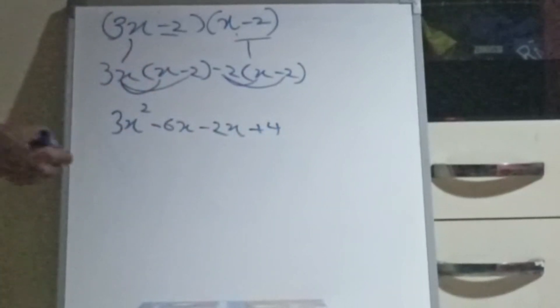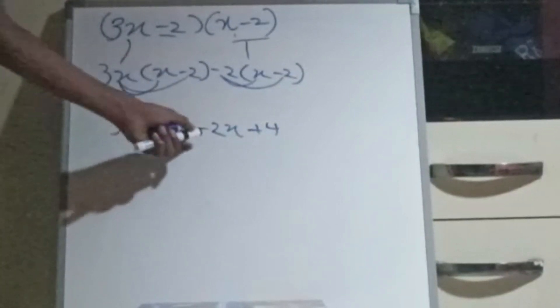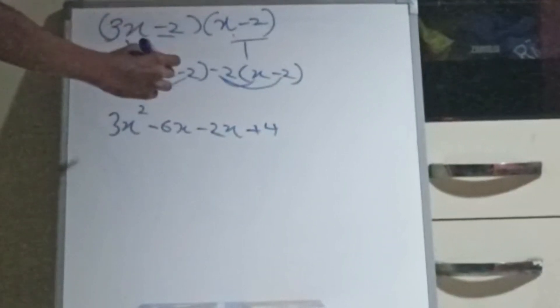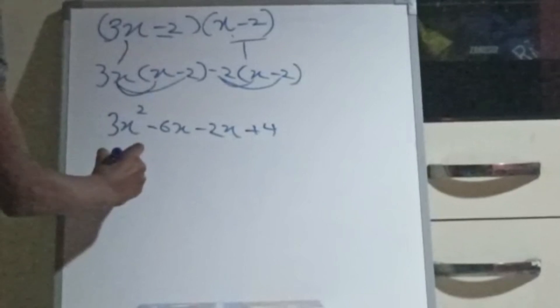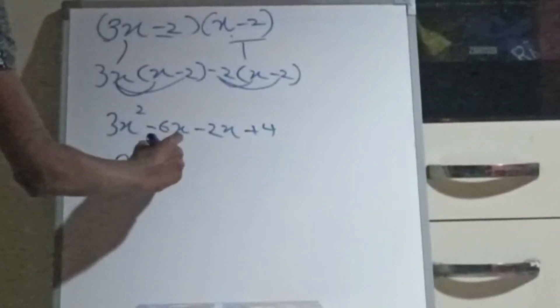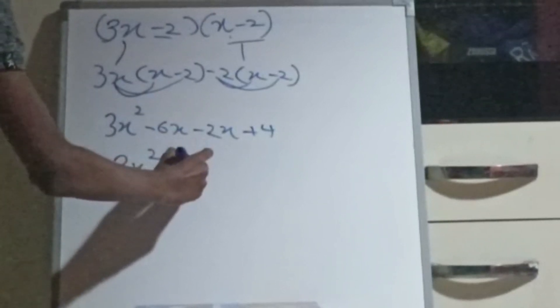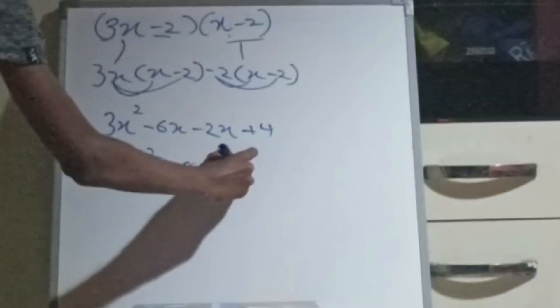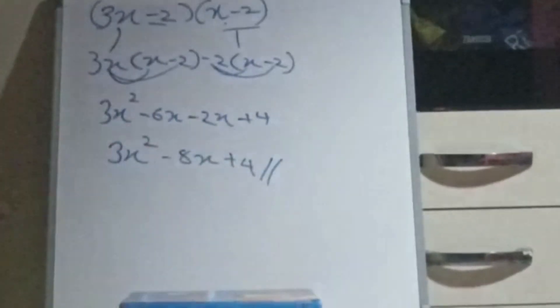So we will arrange this. Then there is same sign. We should add and put that sign. 3x square. Minus 8x. Plus 4. So this is the answer.